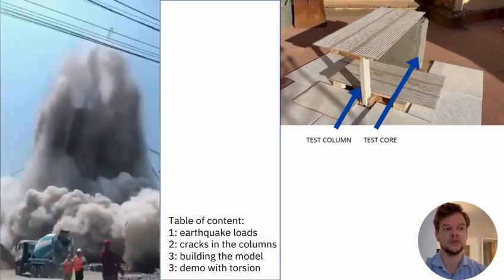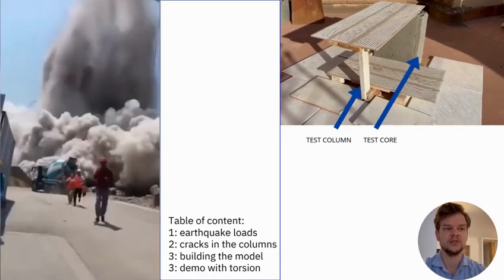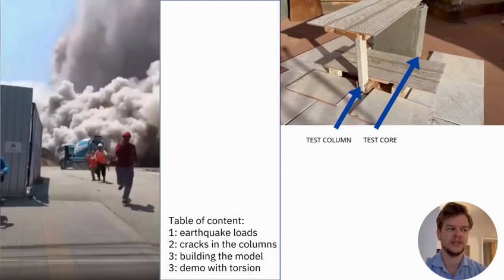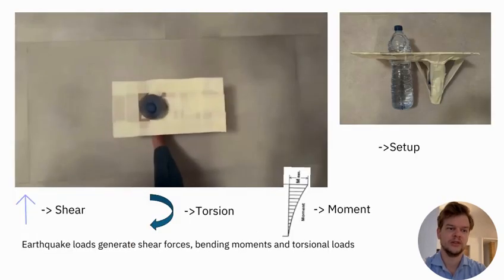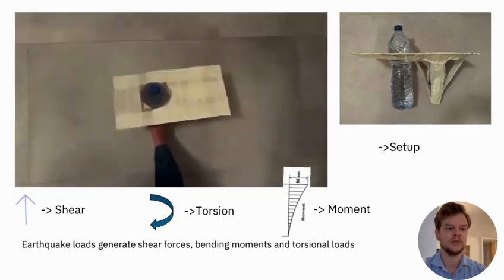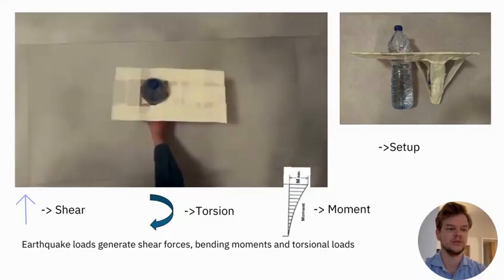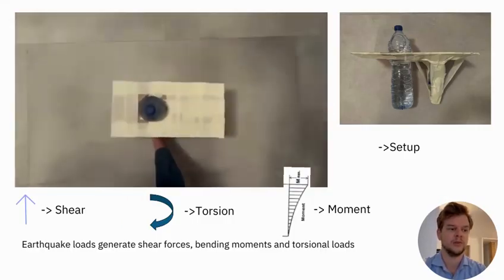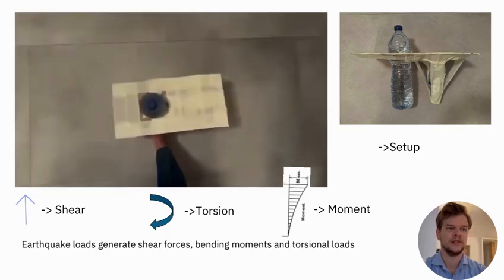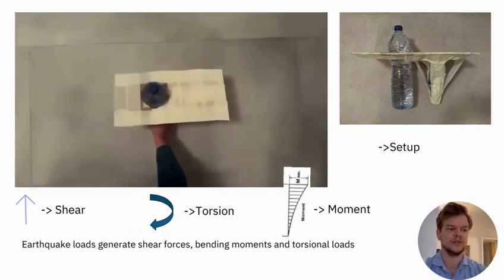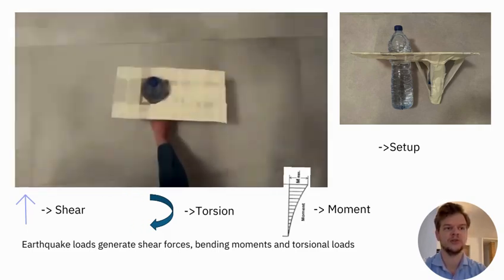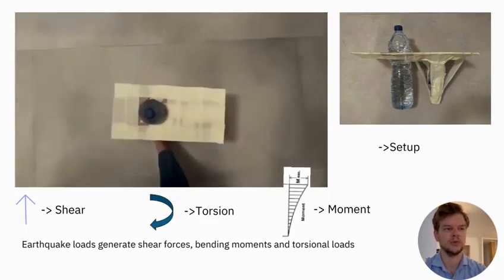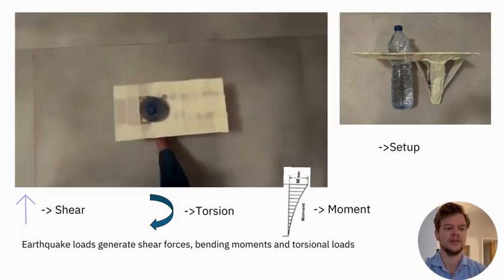In case you wish to see the FEM model I made of the skyscraper, I added a link in the description. On top of the compression loads already present, the video shows the additional earthquake loads generated when the core is not at the center of mass. For those who didn't see my other video, the on-screen graphic clarifies how torsion develops.